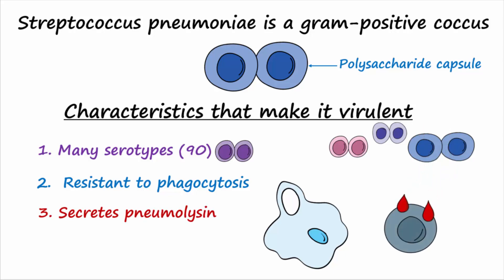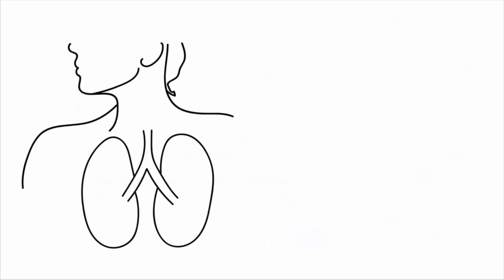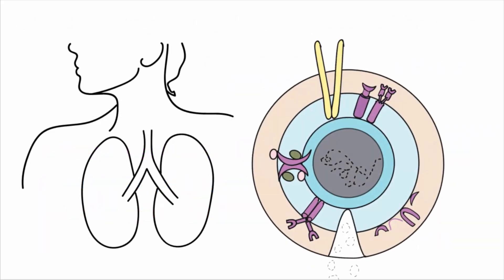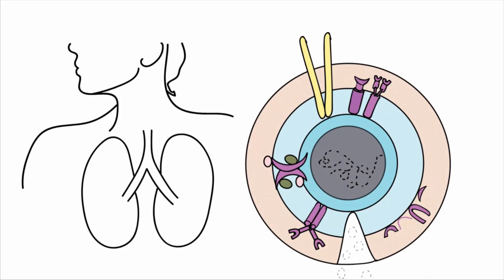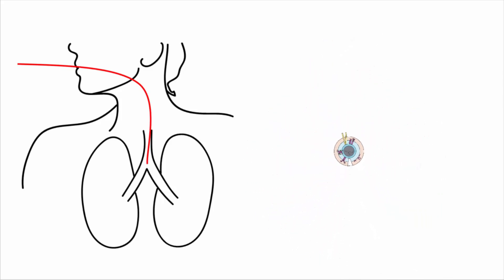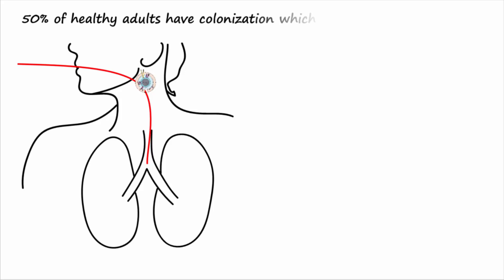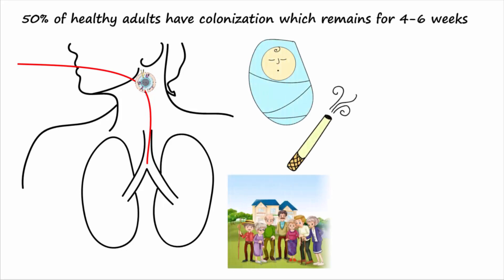Streptococcus pneumoniae, or pneumococcus, is taken into the upper respiratory tract by aerosol inhalation. It uses fibrillar structures or pili to adhere to epithelial cells. To colonize the nasopharynx, about 50 percent of healthy adults at any given time have colonization, which usually remains for four to six weeks. There is a greater percentage of colonization among children, smokers, and nursing home residents.